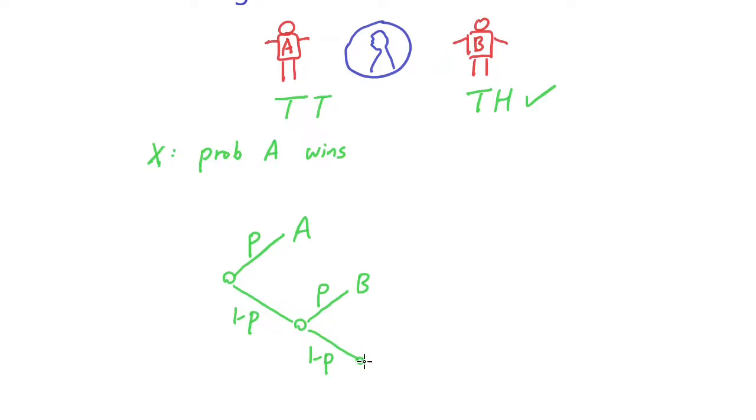What we notice here is that once you pass the coin back to player A, this node is actually the same as this node. So if we denote the probability of player A winning at this node as X, then at here, the probability that player A would win is also X.